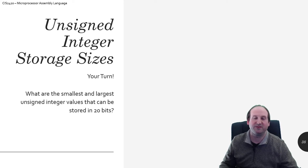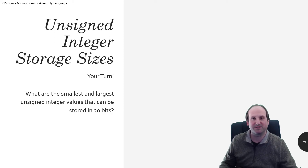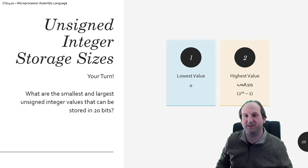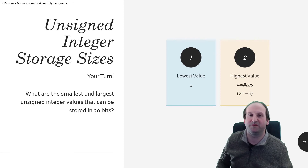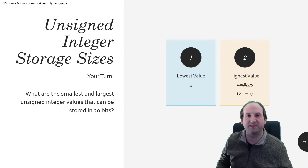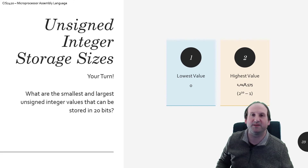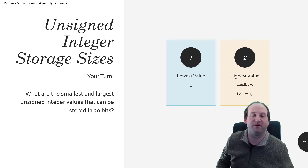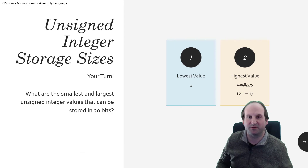My question for you — take a pause if you need to — what would be the smallest and largest unsigned integer values for something that's 20 bits of storage? The lowest value should be obvious: all bits off gives a value of zero. For the largest, all bits set to on is 2 to the 20th minus 1 — and if you run it on a calculator, you'll find that's 1,048,575. So for n bits, the smallest value is zero and the largest is 2 to the n power minus 1.